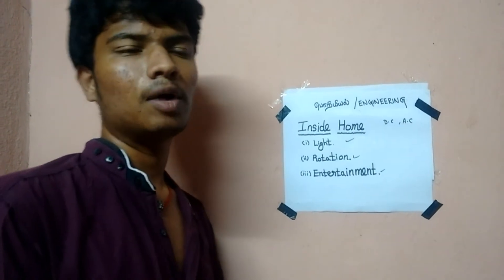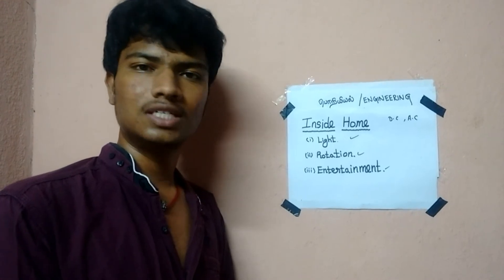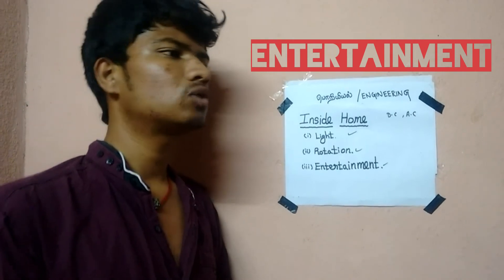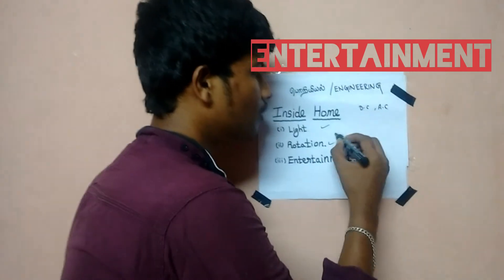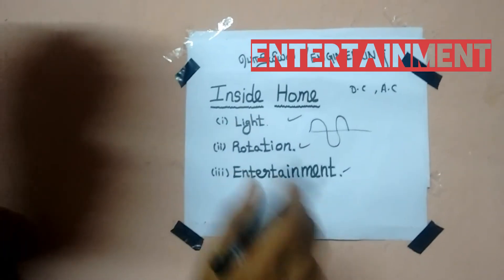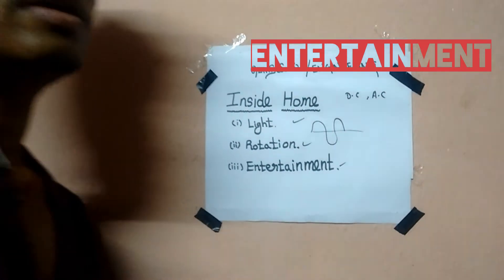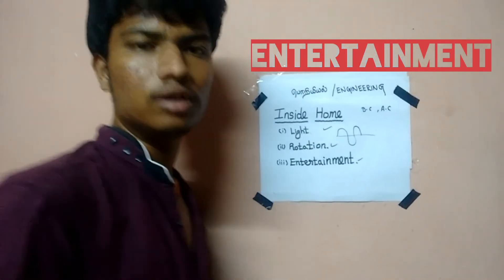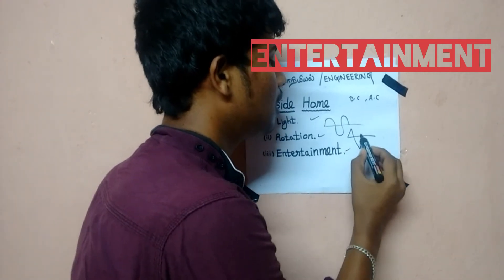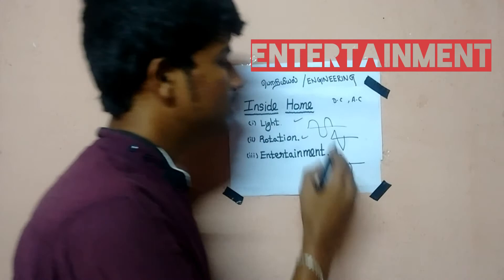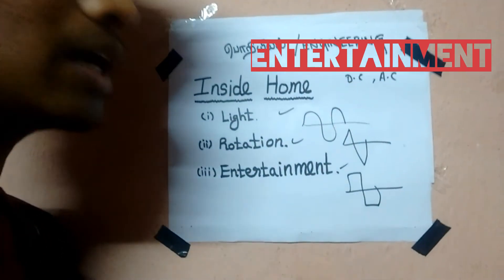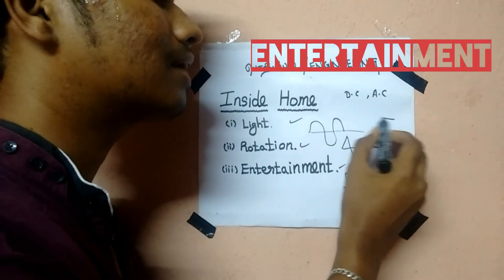Next is entertainment: TV, radio, audio, and video devices. Most of the alternating current waveform is a sine wave. In this sine wave we can also transfer audio. We can also use a triangle and square waveform to transfer audio and image to the TV, so we can use these waveforms in the cable line.